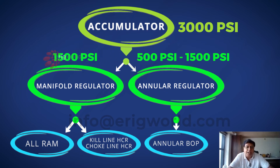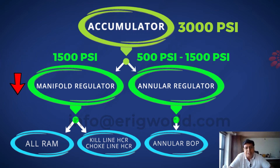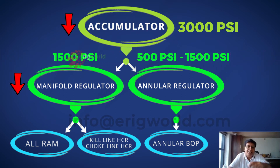When the upper ram is closed, the manifold gives pressure to the upper ram and manifold pressure decreases. The regulator then comes into action — it senses that pressure has decreased and draws pressure from the accumulator, so the accumulator pressure also decreases and rises back to 3000 psi. This is the correct sequence by which you can verify that the ram is closed.